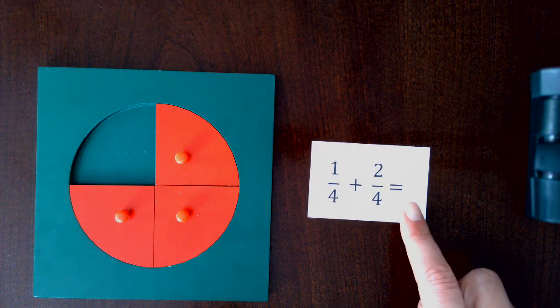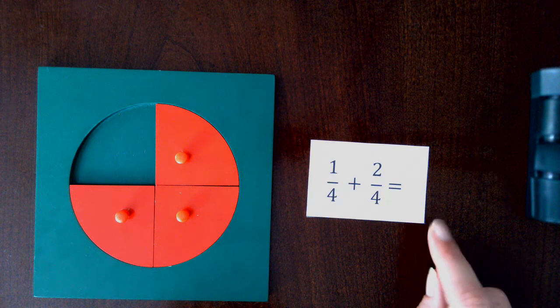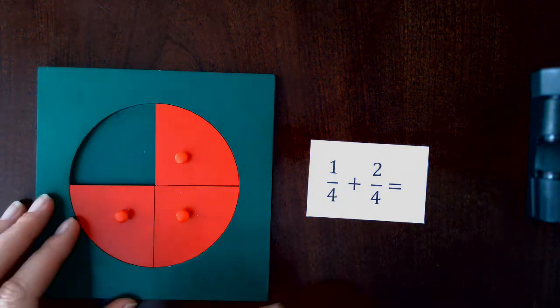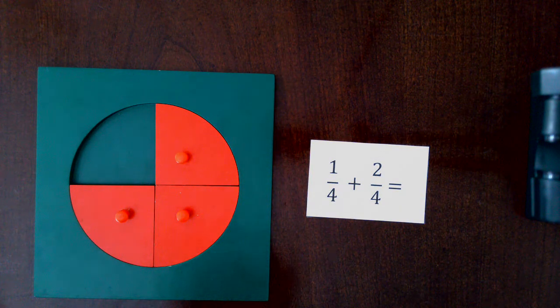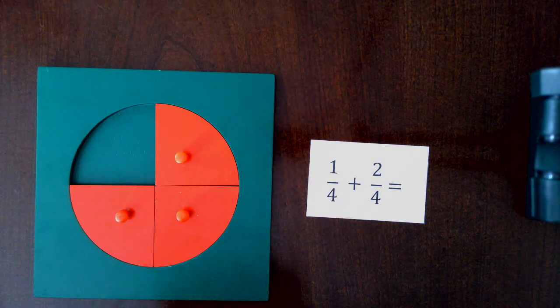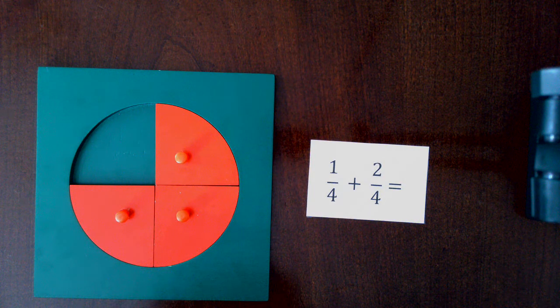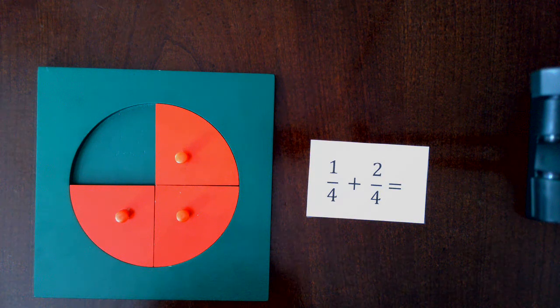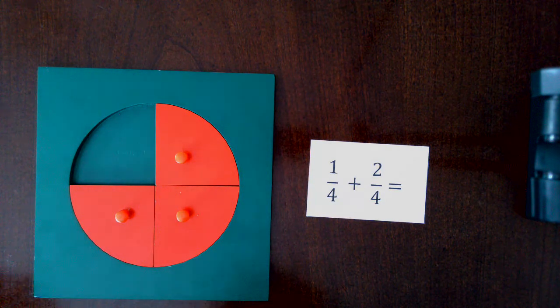The answers can be recorded on the little paper or on a separate paper. Once the child has done a bunch of those, they can be told the rule if they haven't discovered it already. To add fractions of the same denominator, add the numerator, and the denominator will stay the same.